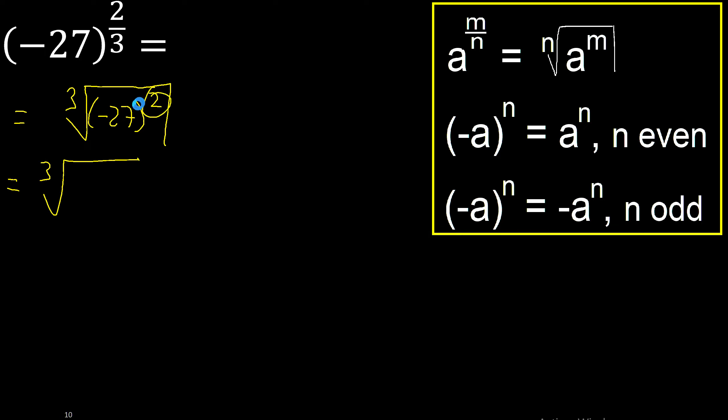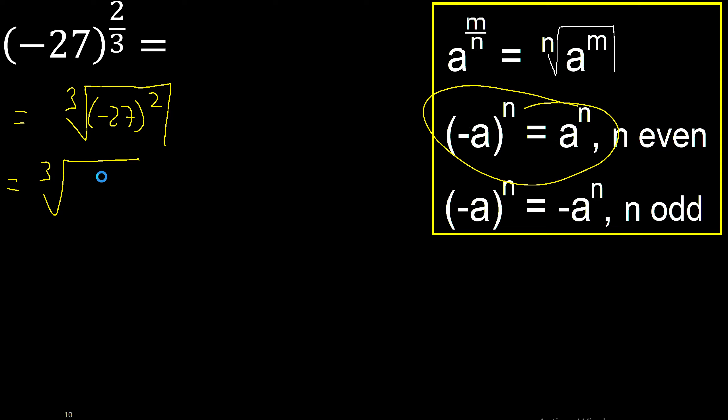2 is the exponent, is even, therefore like this — eliminate minus, eliminate parenthesis.